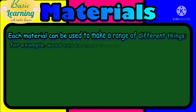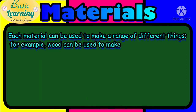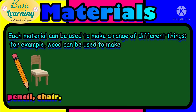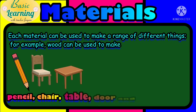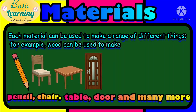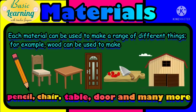Each material can be used to make a range of different things. For example, wood can be used to make different things like a pencil or a chair. Can you give another example of things that are made of wood? A table, a door, a chopping board, or a house.